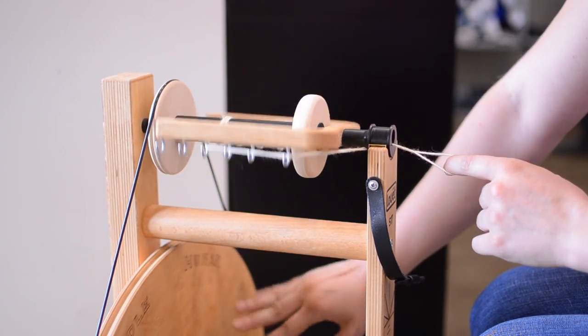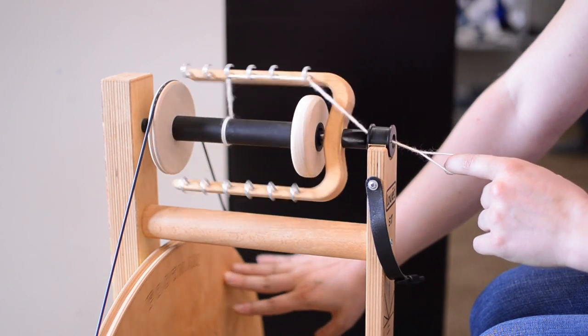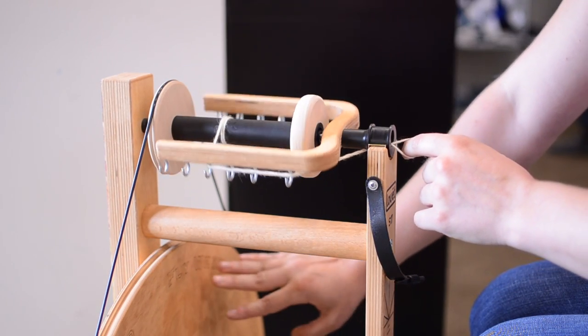Now the flyer moved because I put the tension back on the yarn. So, holding tension, you're adding twist. Releasing the tension, you're winding on.